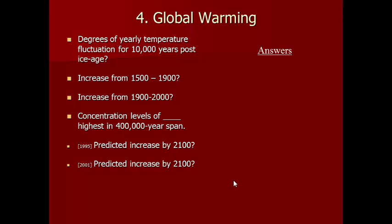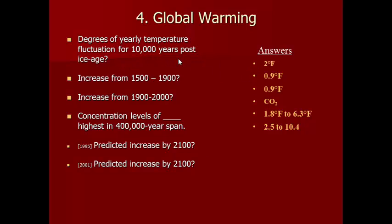Wilson also spends time on global warming, though his numbers are a bit dated. Over the last 10,000 years post-ice age, temperature has bounced around within about 2 degrees. The increase from 1500 to 1990 has been 0.9 degrees, and another 0.9 degrees from 1900 to 2000. CO2 concentration levels are the highest in a 400,000-year span. The predicted increase could be 2.5 degrees or as much as 10.4 degrees by the year 2100 — either of which would produce major changes.